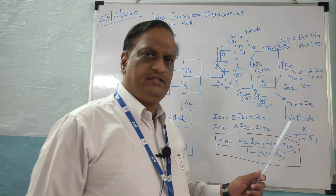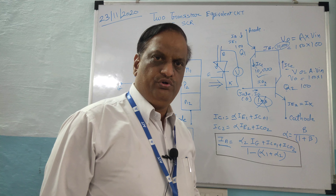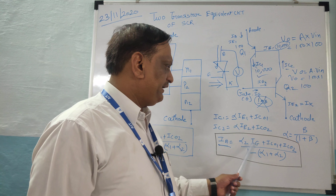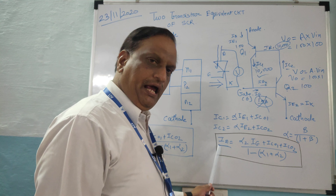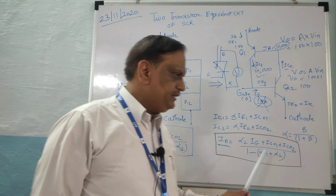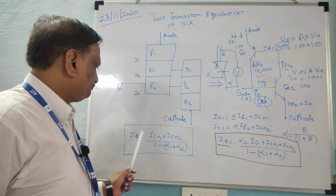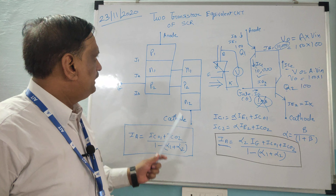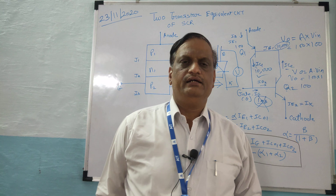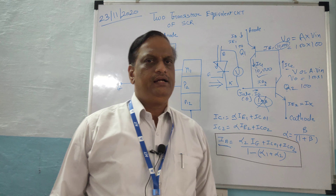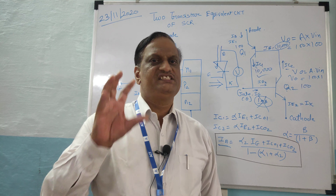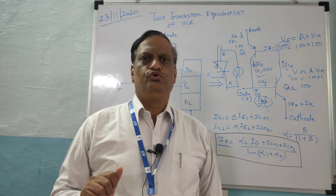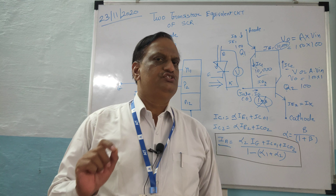In examinations — whether GATE, IS, or university exams — numerical problems are asked based on this equation: given the leakage current, gain values, and IG, find the anode current. From the two transistor equivalent model of the SCR, you can derive and solve for these values. I hope you enjoyed this class and understood how the SCR conducts in the forward direction and how the anode current is established. Please like, share, and comment on the YouTube channel Professor Jitendra Zawde Online Learning Solution. Thank you.